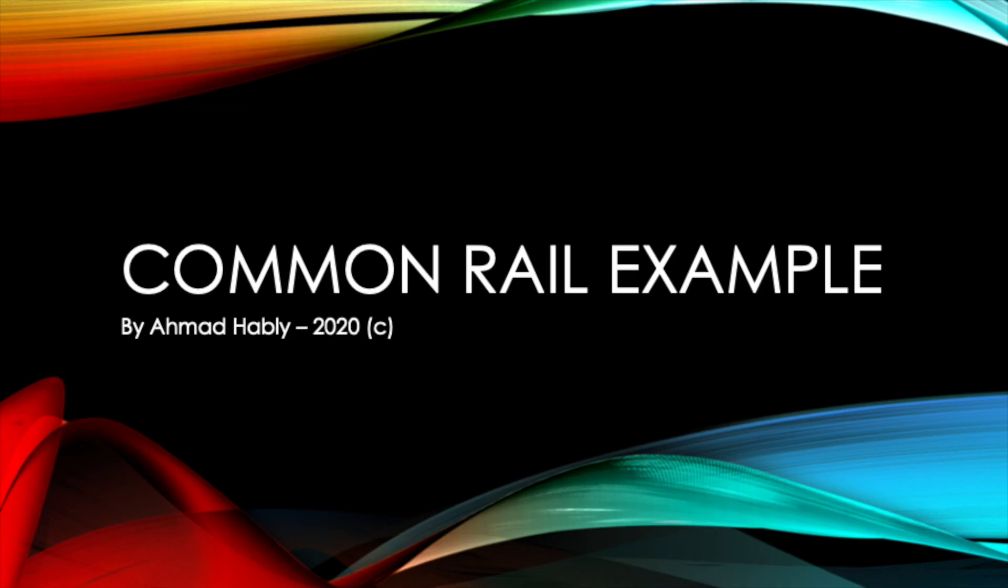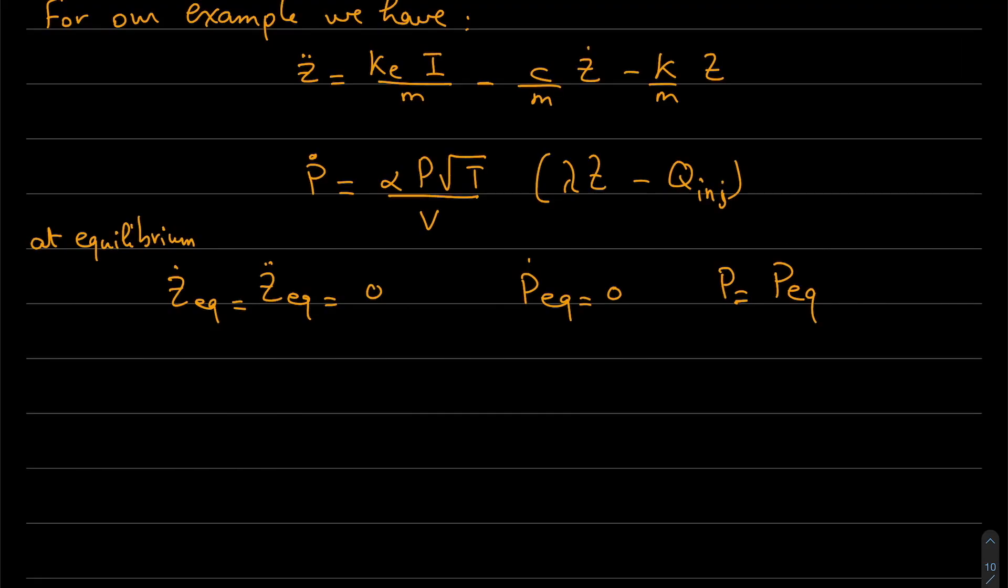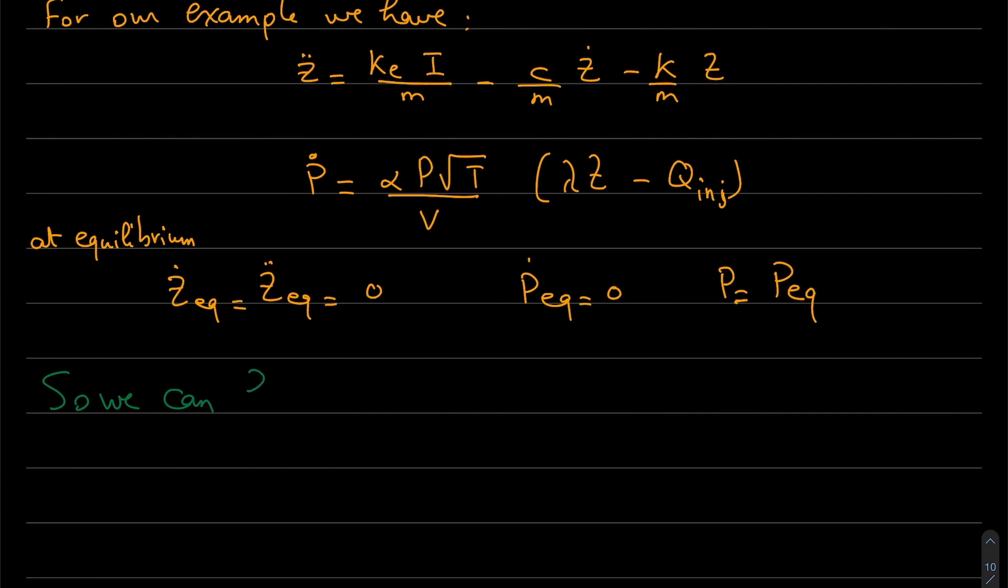If we go to the Common Rail example, we have a third order system, a non-linear system because we have p times z. At equilibrium, the variations equal zero, so we can find a linear system depending on A and B. We can also take the output equal C x_delta, and if we want to take the position of the mass, we can take z equal d times x_delta.